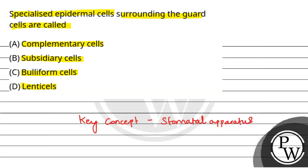So, stomatal apparatus has three components. The first thing is stomatal aperture. Stomatal aperture through which transpiration and gaseous exchange occurs.